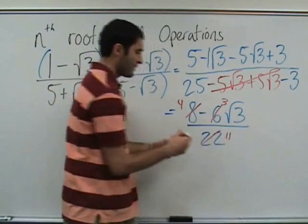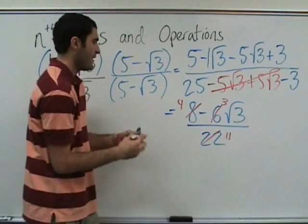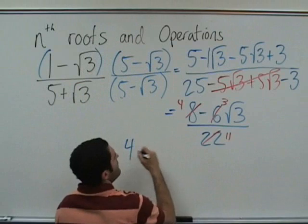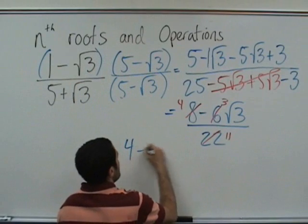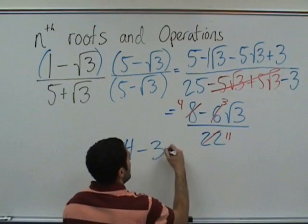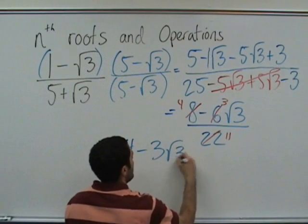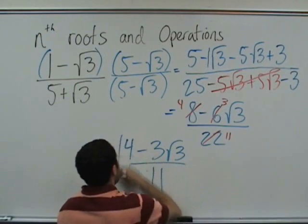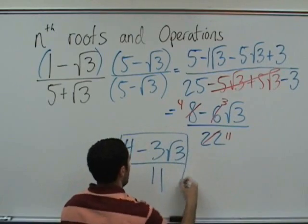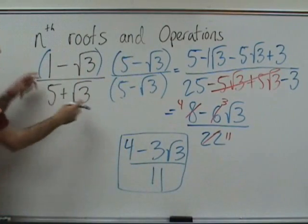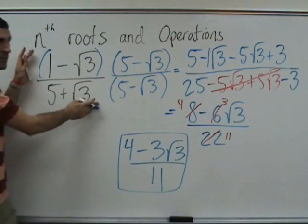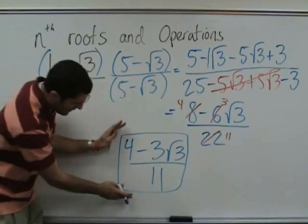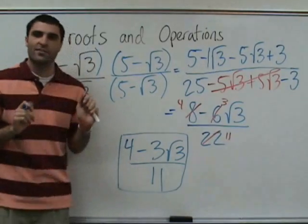So the answer is 4 minus 3 root 3 over 11. This problem simplifies to this answer. There's something very peaceful about solving something and knowing it's right.